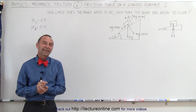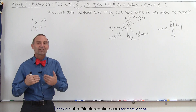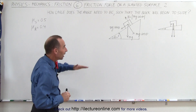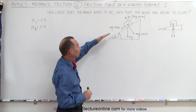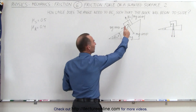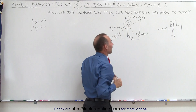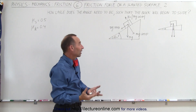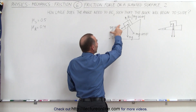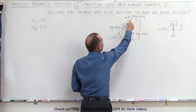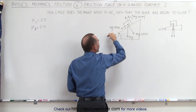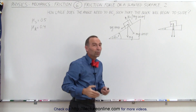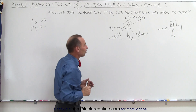Welcome to our lecture online. Here we're seeing a slightly different example of the previous video. We're still on a slanted surface. We have an object that is trying to slide down the incline. The question is, will it slide down the incline? And of course, that depends on whether or not the mg sine theta, the component of the weight that pulls the object down the incline, is larger than the friction force between the surface and the object.